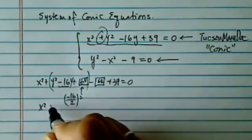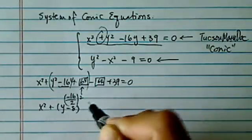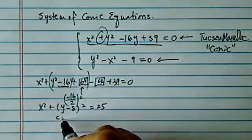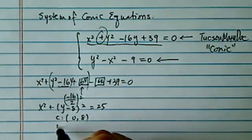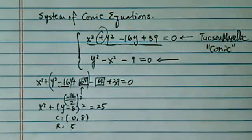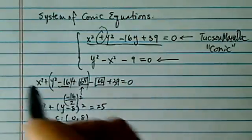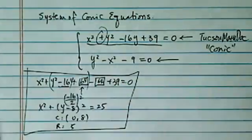And this, you can see it, it's a circle that's shifted with center at 0 and 8, and radius is 5. That's pretty easy, hopefully straightforward thing for you.